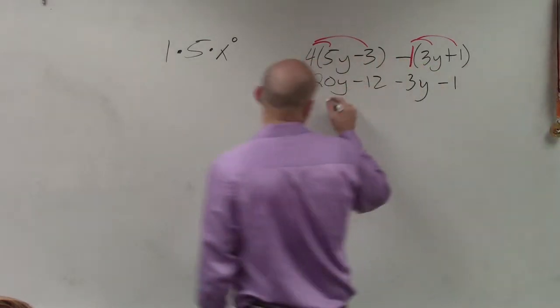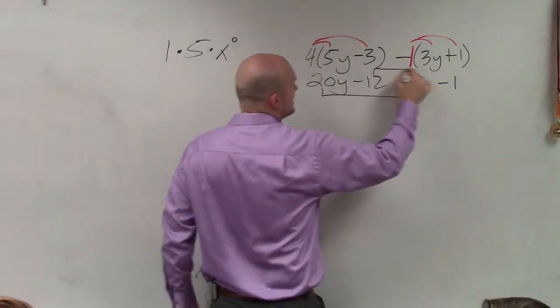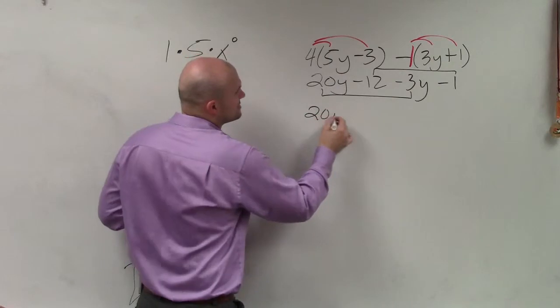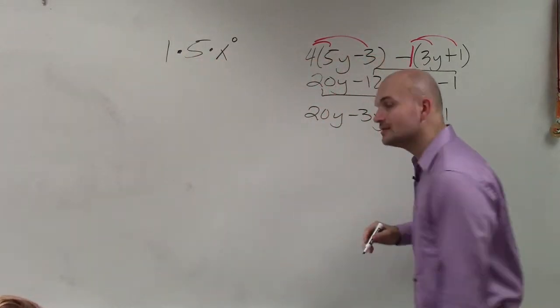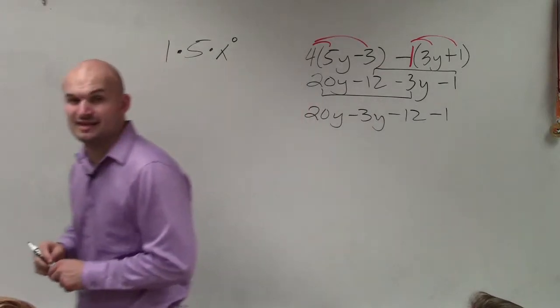Again, what I'll do is notice I can only combine my like terms. So I'll just rewrite this as 20y minus 3y, negative 12 minus 1. Ladies and gentlemen, you do not need to rewrite it like that last step.